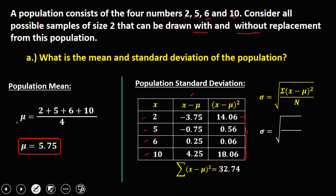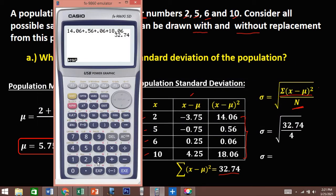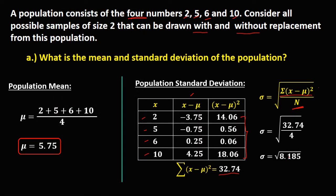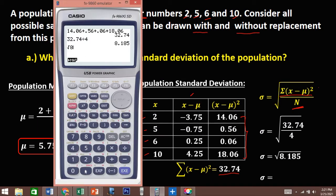To solve for the population standard deviation, we have 32.74 divided by n, which equals 4. So 32.74 divided by 4 is 8.185, and taking the square root of 8.185 gives us the population standard deviation: 2.8609.